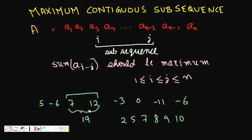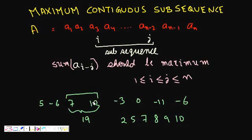Our question now is maximum contiguous subsequence. We are given an array of numbers — or sequence of numbers — positive, negative, or zero. We have to find the subsequence that has the maximum sum. Specifically, we need to find indices i and j where i is less than or equal to j and both are within 1 and n such that the sum of the subsequence is maximum.